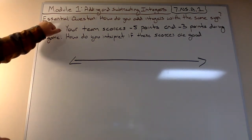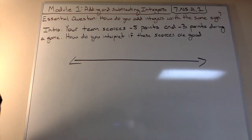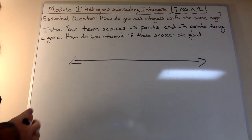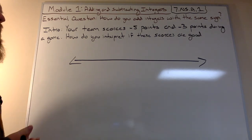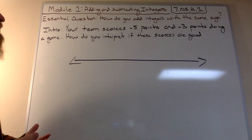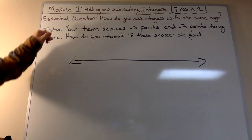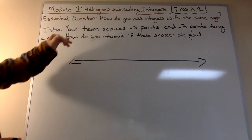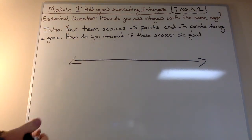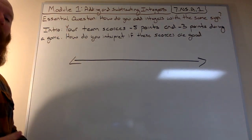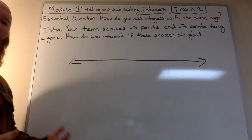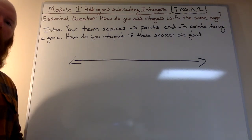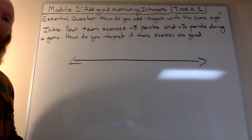I'm always going to be giving you guys the essential question. The essential question is pretty much what you need to know and constantly think about as we're looking at each module, and in this case about adding and subtracting integers. So the essential question for module one is: how do you add integers with the same sign? We have to go back and think about what integers are, and that's something we're going to learn as we begin module one and lesson 1.1.